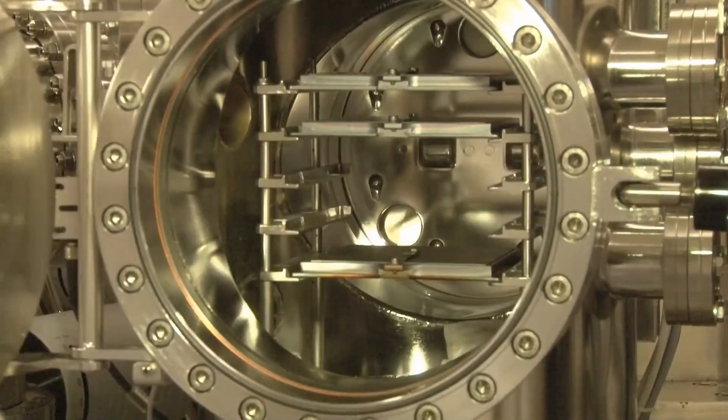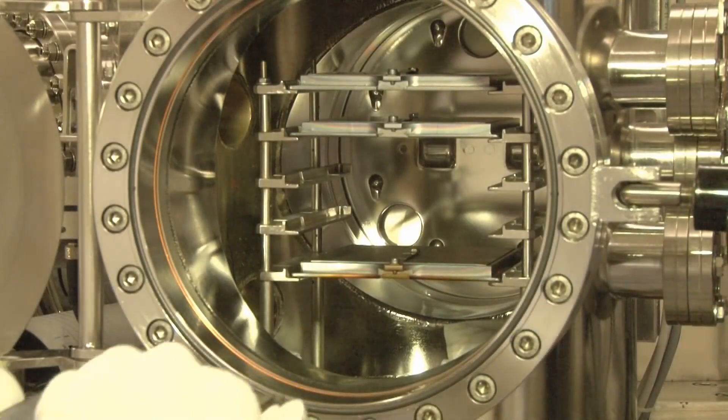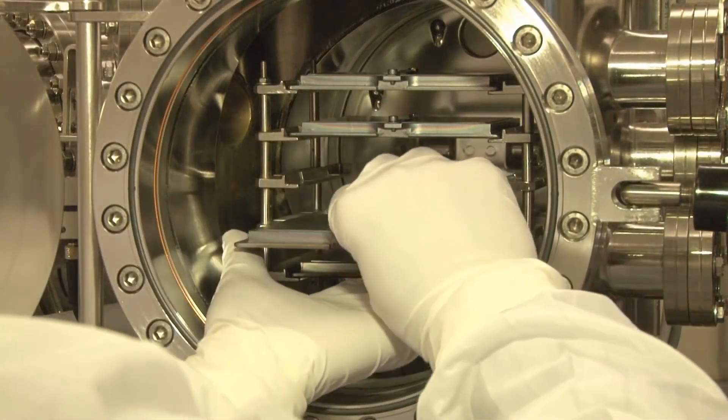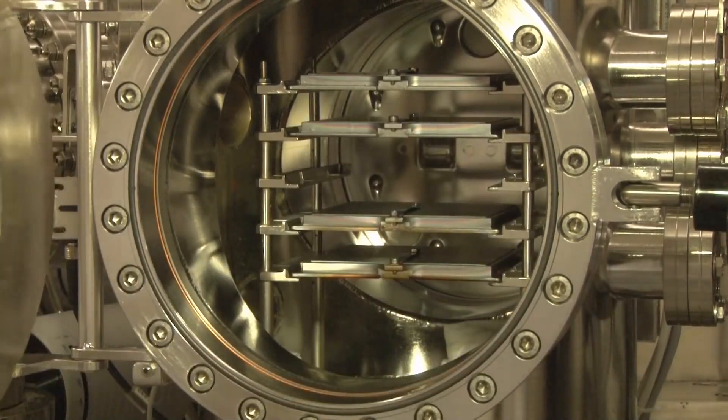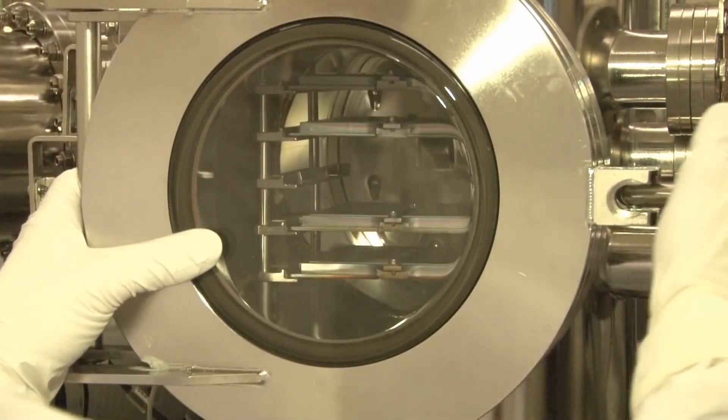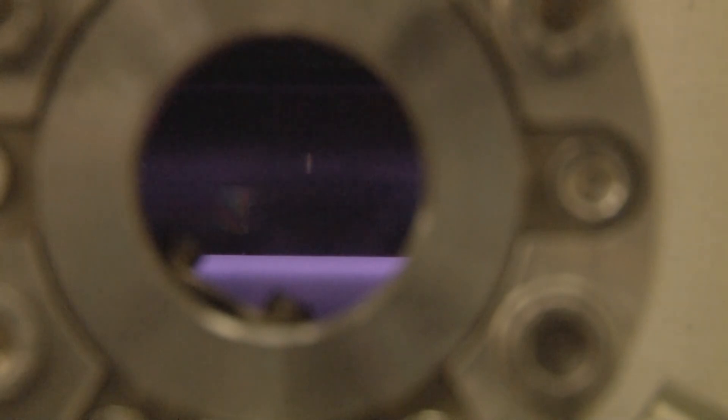Again, we use a load lock. The load lock allows access to the various chambers. Every chamber is dedicated to deposit a type of silicon layer: p-type silicon carbide, intrinsic amorphous or nanocrystalline silicon, and n-doped amorphous silicon or n-doped nanocrystalline silicon.